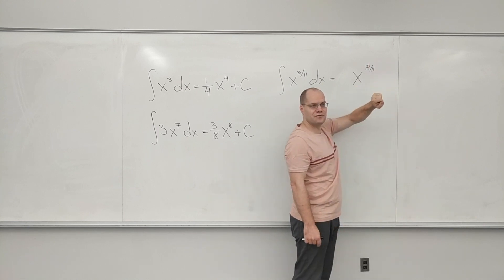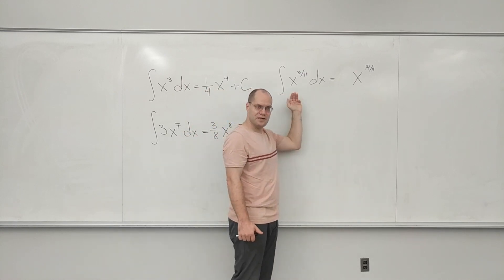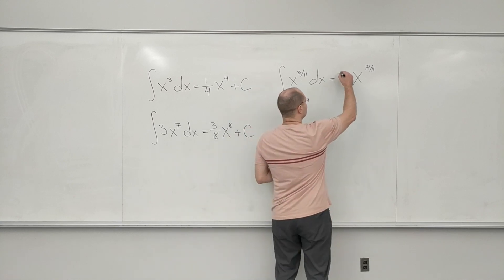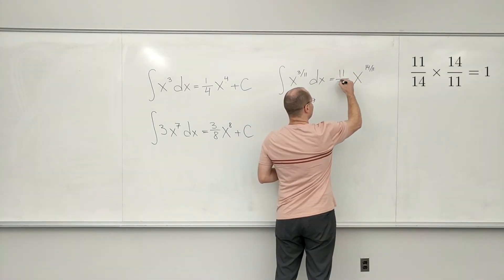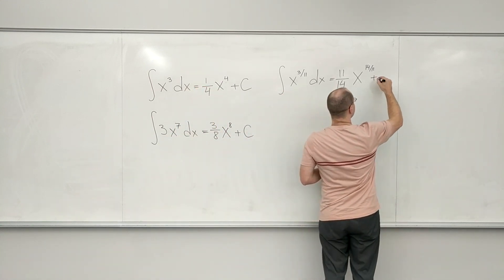So when I take this derivative, 14/11th comes down, and I realized that I missed my target by a factor of 14/11. So to make up for it, I have to put down 11/14, and this problem is done plus C.